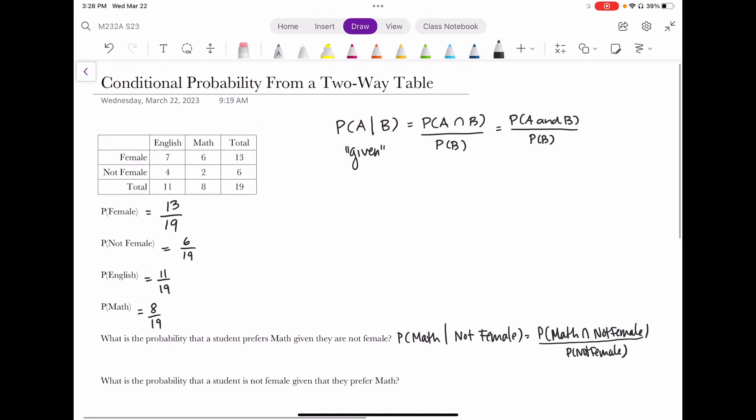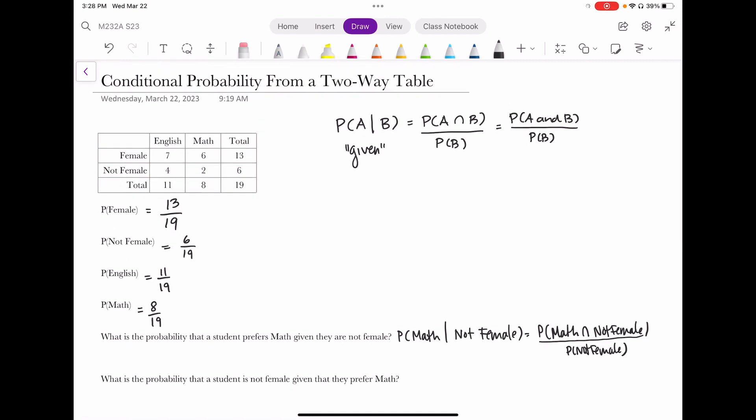But calculating the probability of a given in a two-way table is actually a little bit easier because you're talking about a particular group. If I'm saying, we are talking about those that are not female, then I have that condition that I only care about those that are not female. And of those that are not female, how many of them prefer math? Well, there's two. So the probability of preferring math given you are not female...